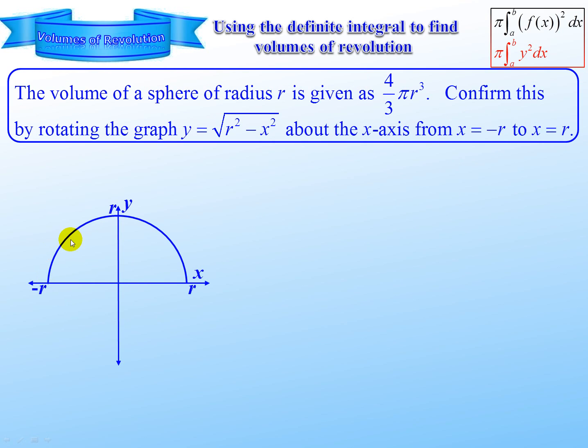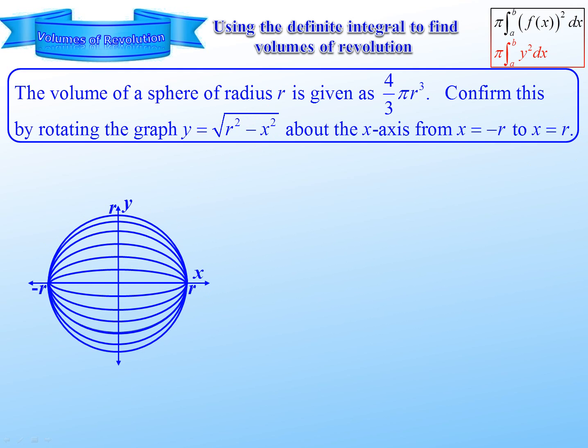If we take this semicircle, y equals the positive square root of r squared minus x squared, from negative r to r, and we rotate it about the x-axis, we form a sphere, a ball shape.